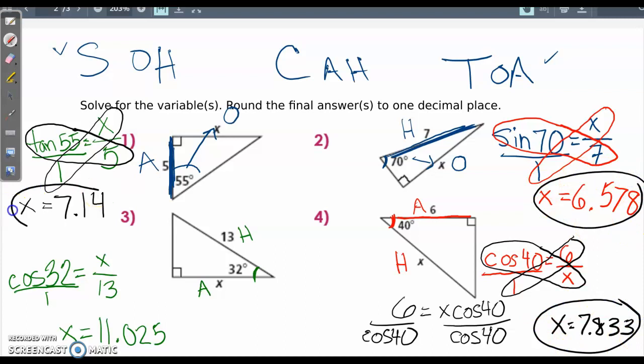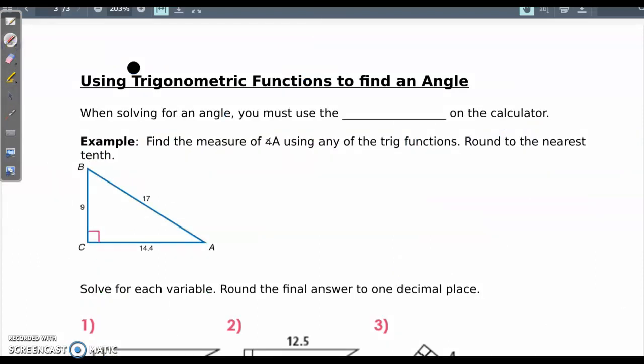Alright, write what questions you have so far on solving for a missing side. Let's get to solving for a missing angle now. When solving for a missing angle, you must use the inverse on the calculator. So I'll show you what the calculator is going to look like in a second, but let's first set up the example.